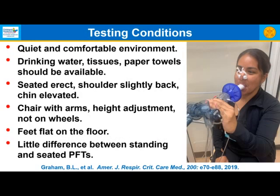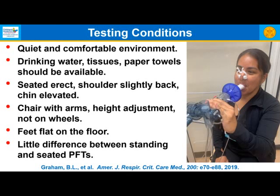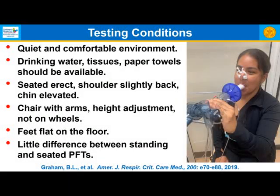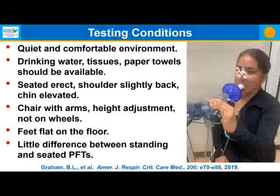Testing conditions are important. Pulmonary function testing should be done in a quiet, comfortable environment with drinking water, tissues, and paper towels available. The subject should be seated erect, shoulders slightly back, and chin elevated. Chairs should have arms and a height adjustment but not wheels. Feet should be flat on the floor. There is little difference between standing and seated pulmonary function testing, so most people do this in the seated position.